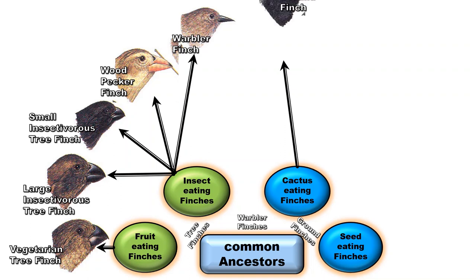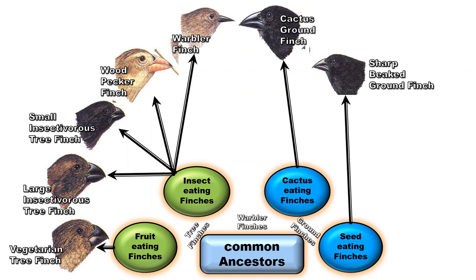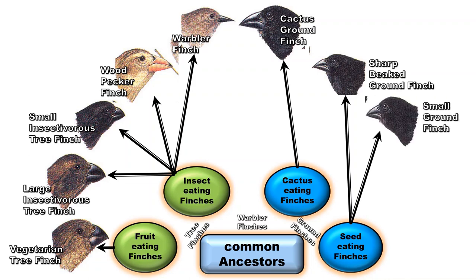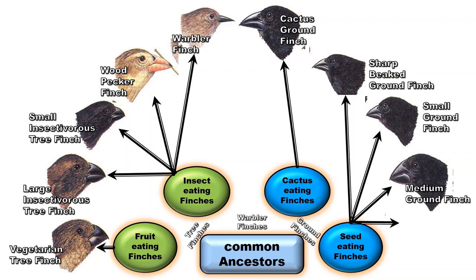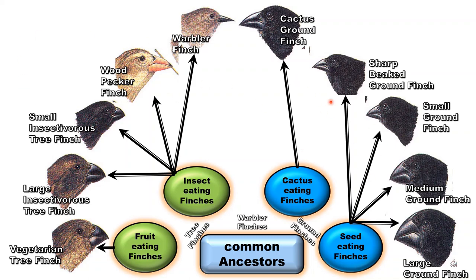In the picture we can see various types of finches — some found on the ground, some on the trees — adapted to different food habits. On the right side are the finches present on the ground, and on the left side are finches present on the trees with different food habits. For example, this tree finch has developed a fruit-eating habit; these are insect-eating finches; this one is eating cactus; and these finches have developed beaks according to their seed-eating habit. So from a common ancestor, these different species were formed — a perfect example of adaptive radiation.